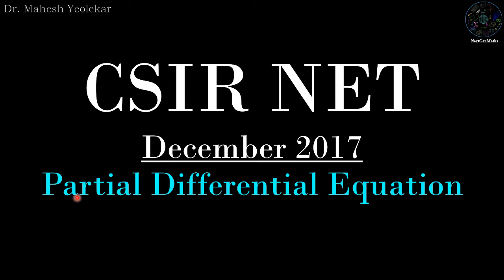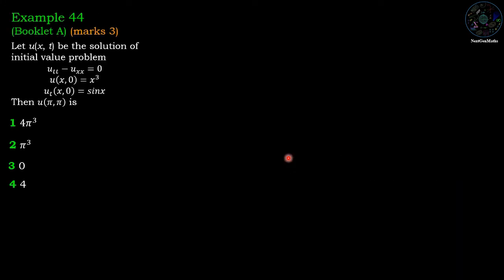Hello friends. In this video we are going to discuss the problem of partial differential equations from CSIR NET December 2017. Example No. 44, Booklet A, 3 marks. Let u(x,t) be the solution of the initial value problem: u_tt minus u_xx equals 0, with initial values u(x,0) equals x³ and u_t(x,0) equals sin(x). Then the value of u at (π, π) is: first option 4π³, second option π³, third option 0, and fourth option 4.